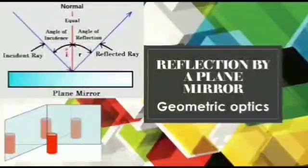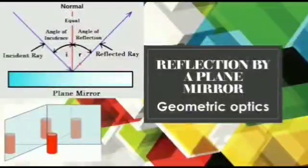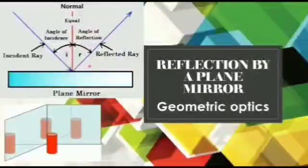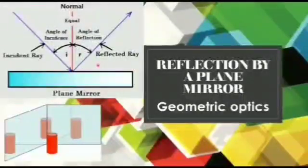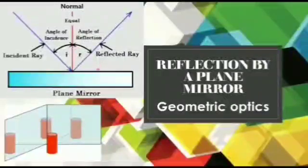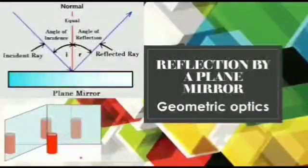According to second law of reflection, angle I is equal to angle r or I is equal to r when reflection takes place from smooth surfaces or plain surfaces. This is an example of such a reflection.